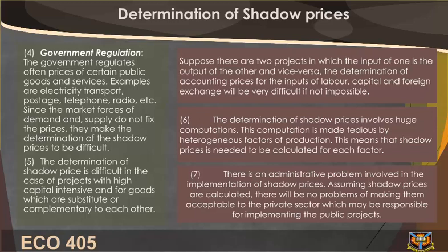Fifth, the determination of shadow price is difficult in the case of projects that are highly capital intensive and for goods which are substitutes or complementary to each other. Suppose there are two projects in which the input of one is the output of the other and vice versa — the determination of accounting prices for labor, capital, and foreign exchange will be very difficult if not impossible.